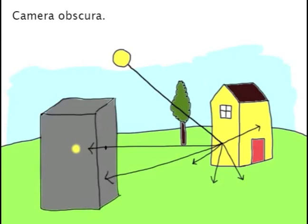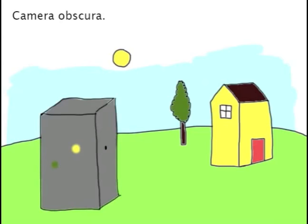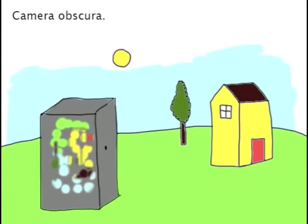The reflected light will be the same color as the object in the landscape. Light reflects off other objects too. All of the spots of light combine to form an image on the back of the camera obscura.